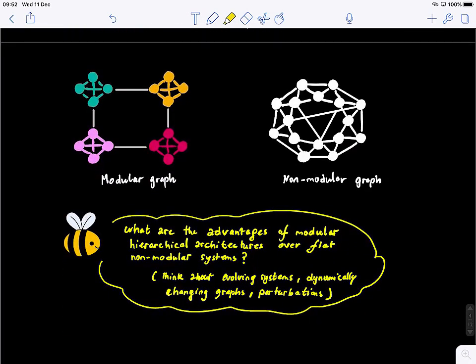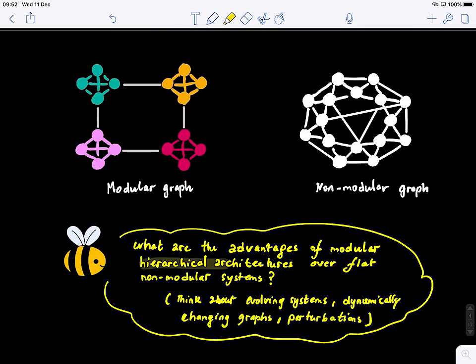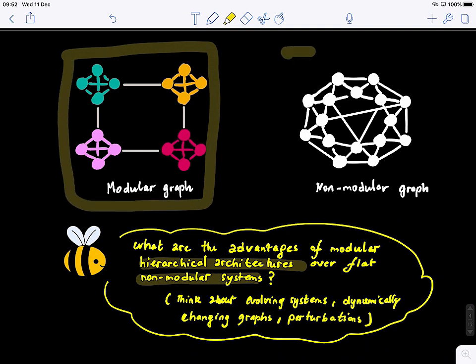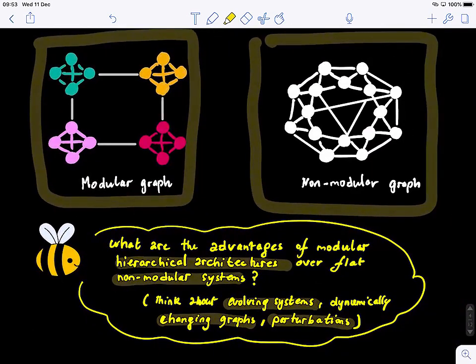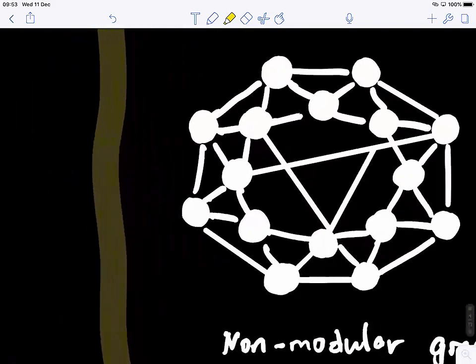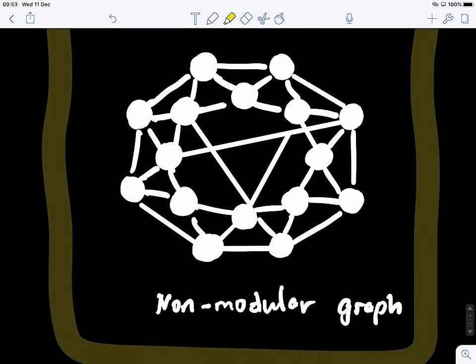Now, what are the advantages of hierarchical architectures over flat, non-modular systems? You can see that I have given you a few examples, but these examples are based on intuition. I would like you to use some graph theory concepts that we saw before and think about how - for example, evolving systems, dynamically changing graphs - if we perturb the system, which one would be more robust? You need to think about what are the advantages of formalizing my problem or putting my data in a modular way as opposed to connecting it in a flat, non-modular manner.